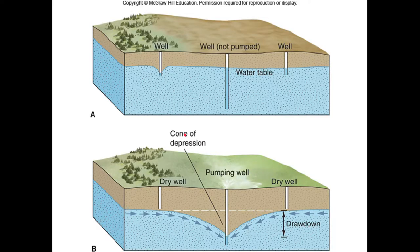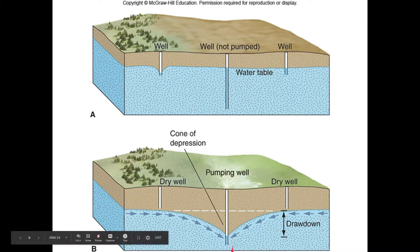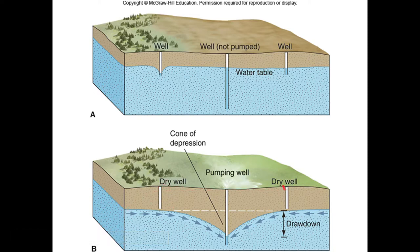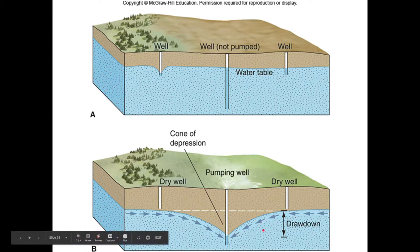Here we have the water table and saturated zone. When you pump out a lot of water - say you put in a big well to spray water all over an area to make a golf course - you can draw down the water table. People living nearby will have their wells dry up if they're not deep enough. This is a frequent problem where industries move next to neighborhoods on well water, use gallons and gallons for their business, and end up drawing down the water table for everybody else around them.